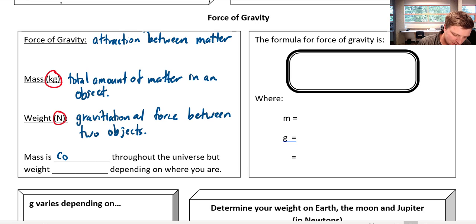So mass is constant throughout the universe. I mean I guess if you eat a sandwich your mass can change. But what I mean is no matter where you are in the universe your mass would be the same value. Weight changes depending on where you are.